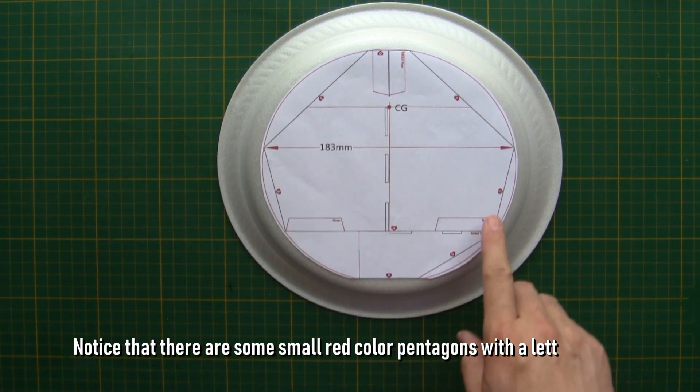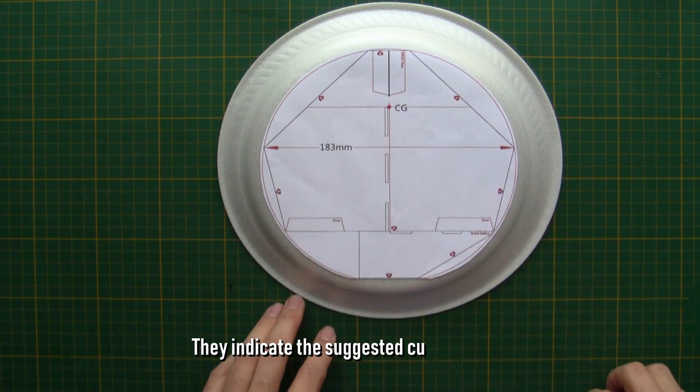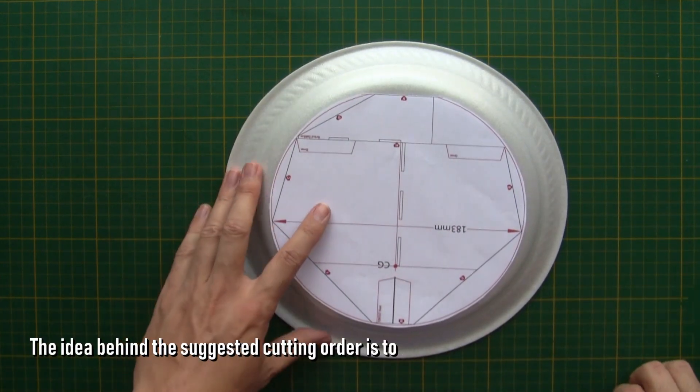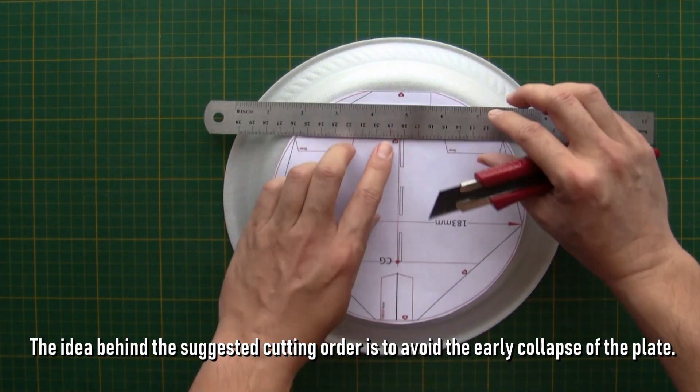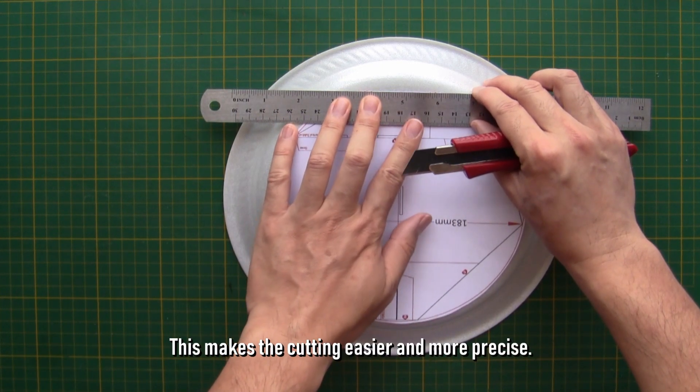Notice that there are some small red color pentagons with a letter inside. They indicate the suggested cutting order. The idea behind the suggested cutting order is to avoid the early collapse of the plate. This makes the cutting easier and more precise.